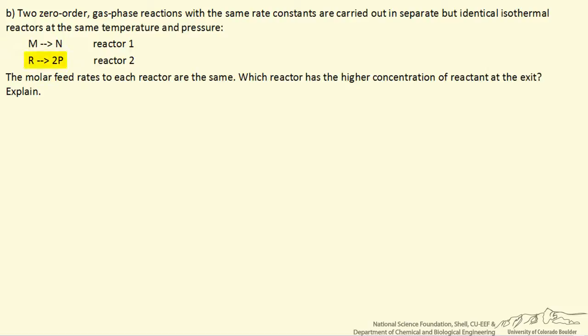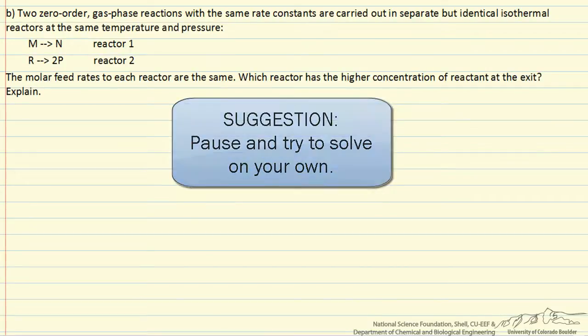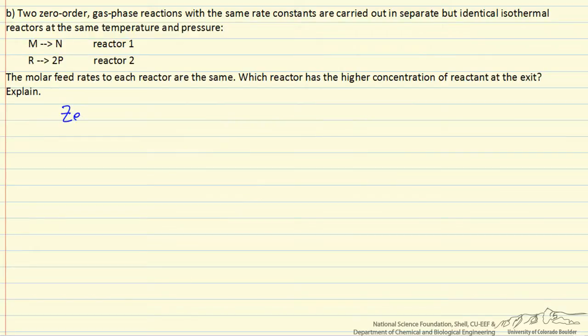Essentially everything is identical except in the second reactor, the reaction of one mole of reactant forms two moles of products. The question is, which reactor has the higher concentration of reactants at the exit? An important part of this comparison is that the reactions are zero order. This means the rate constant times the volume is the total rate of reaction in each reactor, and the total rate is the same for each reactor because k and volume are the same. So the flow rate of M leaving is the same as the flow rate of R leaving.